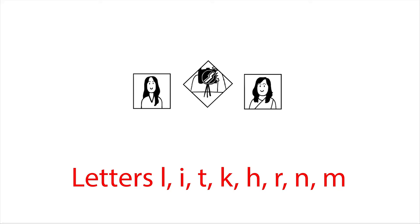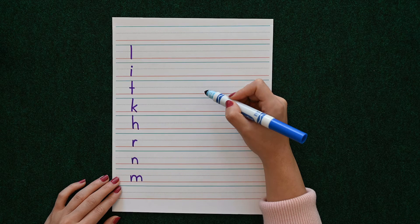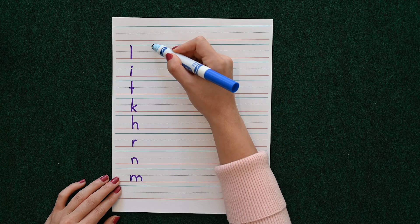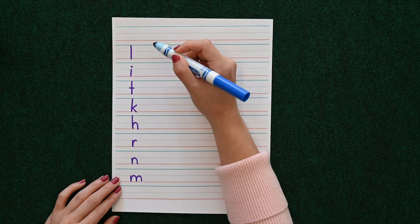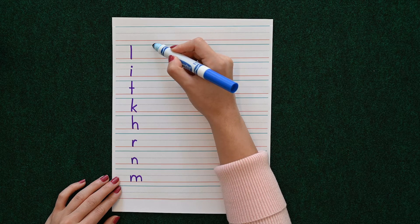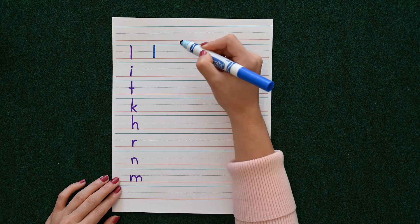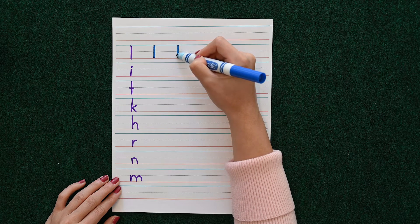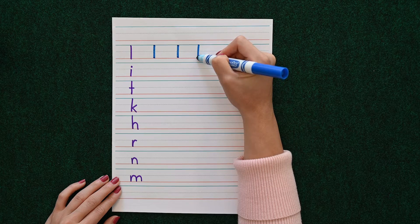We're going to do some letters which all start with a downward line. Some start at the top on the blue solid line; some start on the dotted blue line in the middle. The first one is L. L starts on the top blue line and goes down. Top line, down.